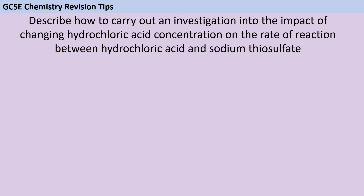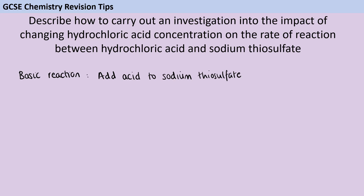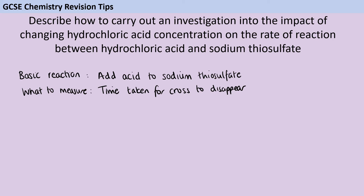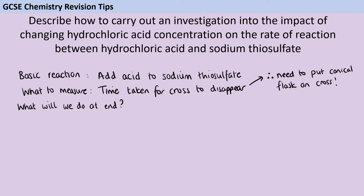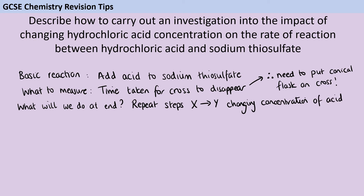This is quite a complicated investigation, so I'm going to make some notes before starting. The basic reaction is mixing hydrochloric acid and sodium thiosulfate, and the method must state that they go into the conical flask together. What I'm going to measure is the length of time taken for a cross — placed under the conical flask — to disappear due to the sulfur produced. For the independent variable, I'll repeat the steps and change the concentration of the acid, which I can do by diluting it down with water.